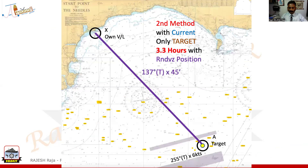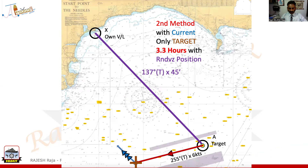Now let us see what can happen to own vessel. Before that, I am quickly showing you how to do the same thing on the chart. This is your target — I am extending the CTS for 3.3 hours for the target. What I achieve is the DR for the target for 3.3 hours, then the current, and finally the rendezvous position. So this is the individual full 3.3-hour triangle for the target only.